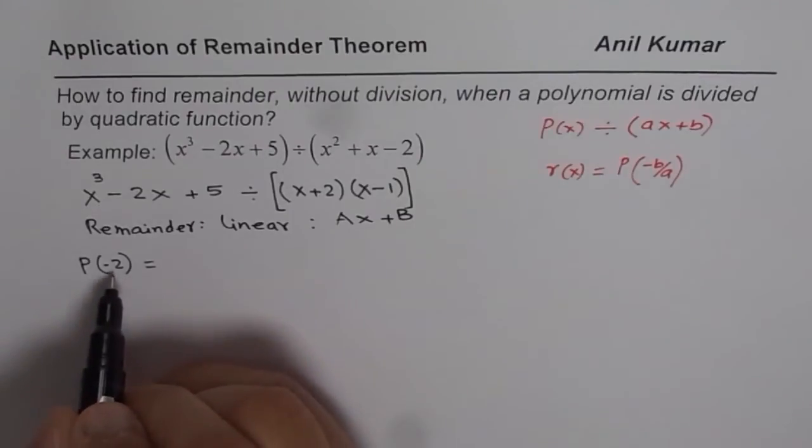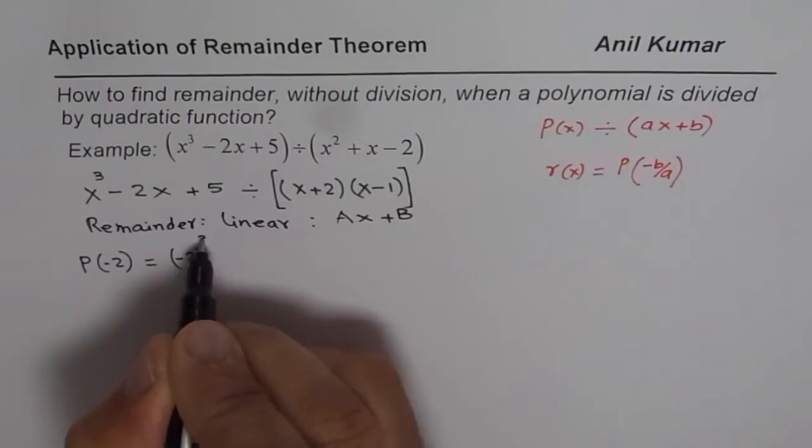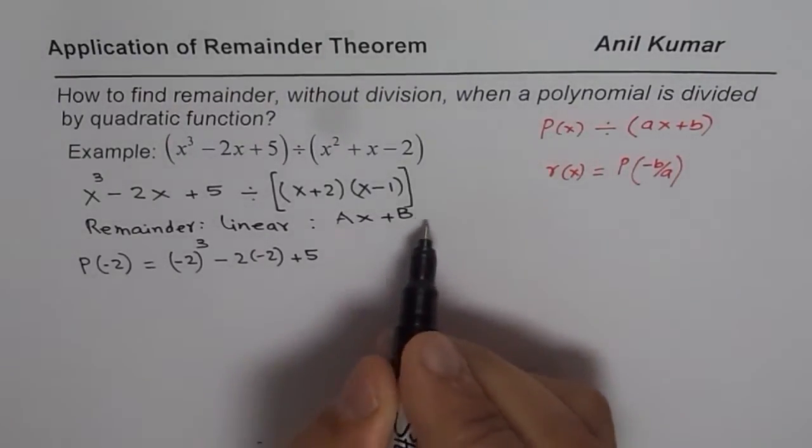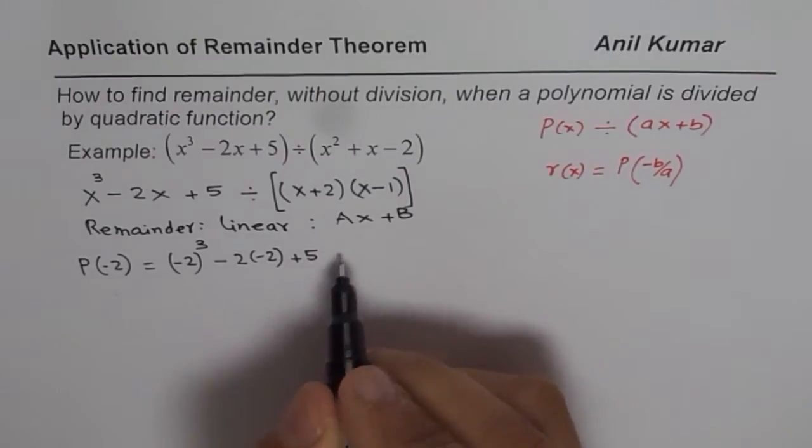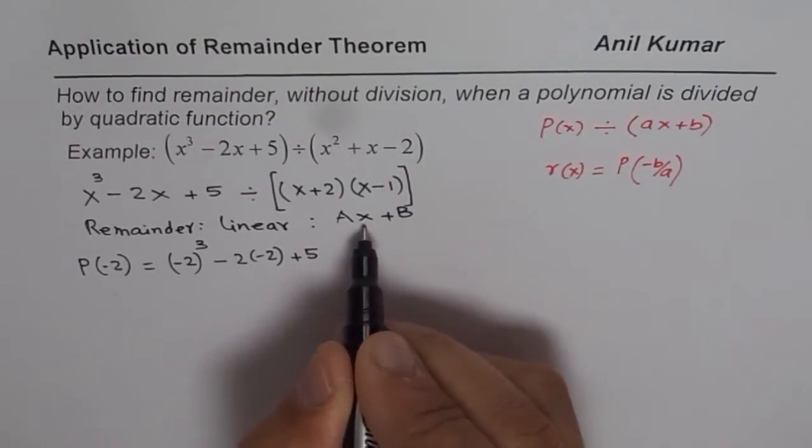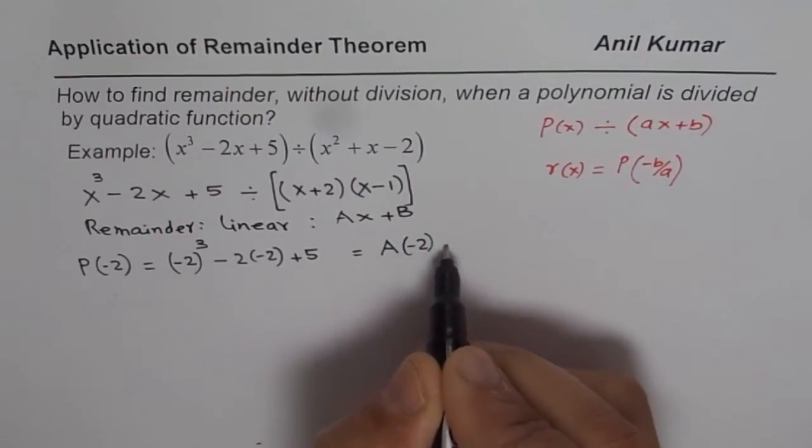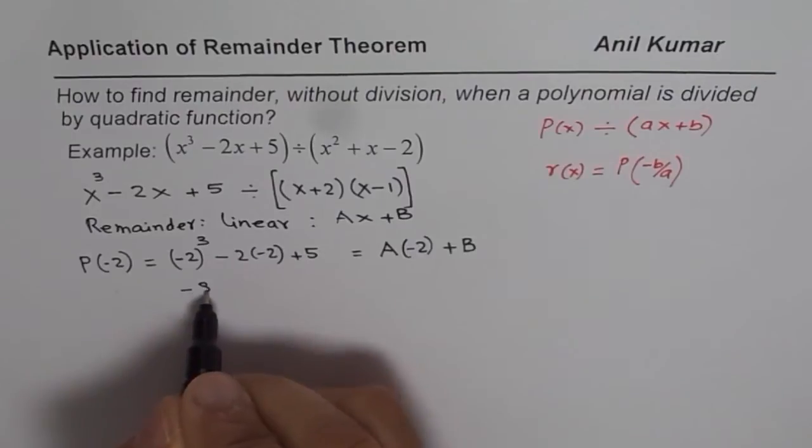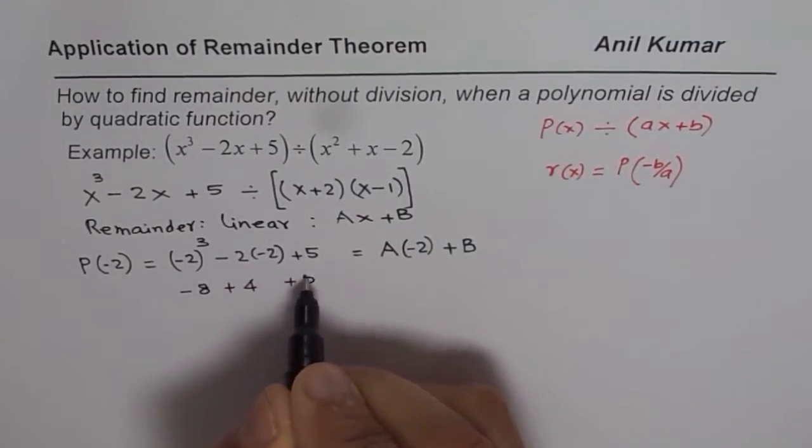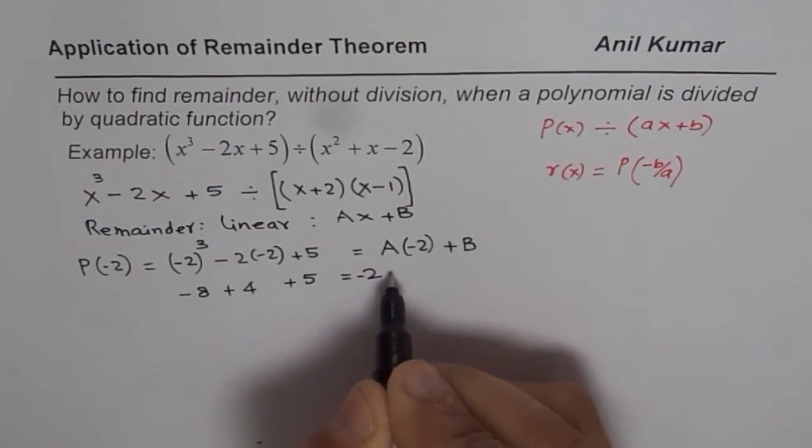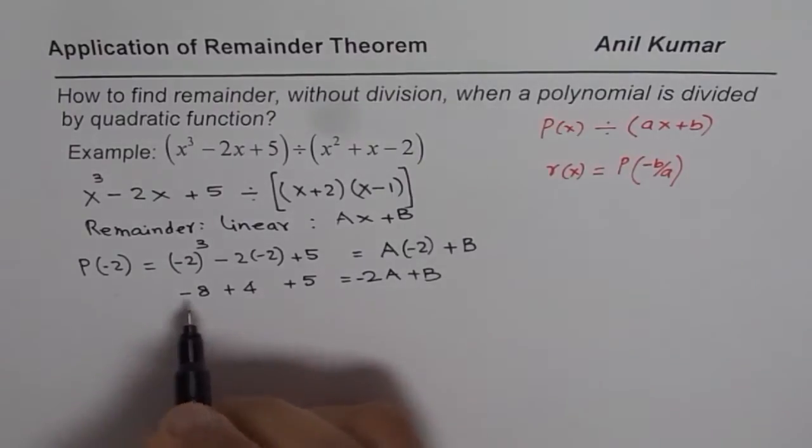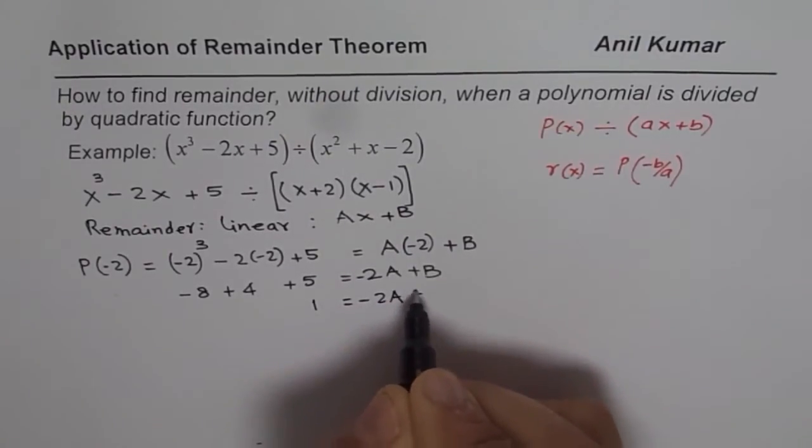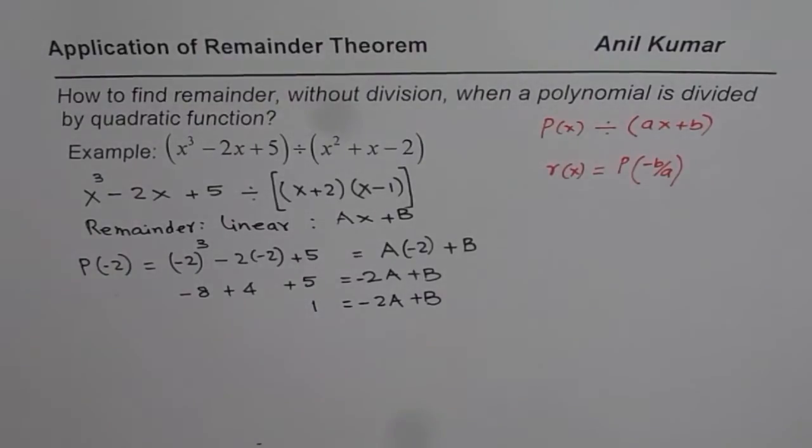The remainder when you divide by X plus 2 will equal—I'll substitute minus 2 for X. So we have (-2)³ minus 2 times (-2) plus 5. We can write minus 2 for X in the remainder form, so we get A times (-2) plus B. Let's simplify this: minus 8, plus 4, plus 5 equals -2A plus B. That is 1 equals -2A plus B. Let us call this equation number 1.